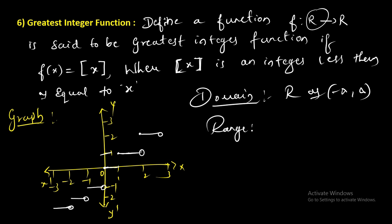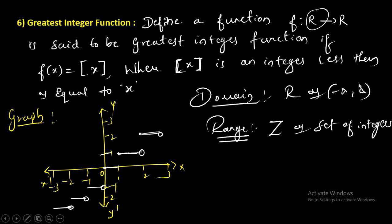The domain of the greatest integer function is capital R or minus infinity to plus infinity. The range consists only of integers — you get 0, 1, 2, 3, minus 1, minus 2, and so on — so the range is capital Z, the set of integers. Go through all the types of functions; you will definitely get one question in the examination on definition, graph, domain, and range. Thank you students, prepare well for the test. Wish you all the best. Regards, Department of Mathematics.